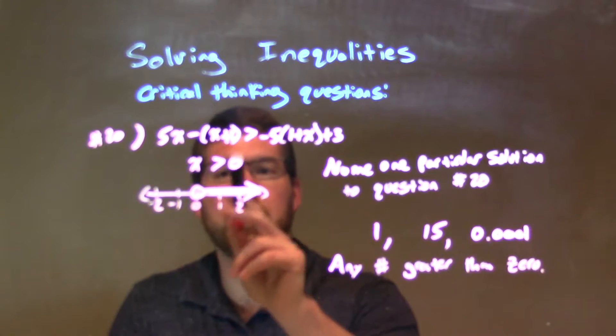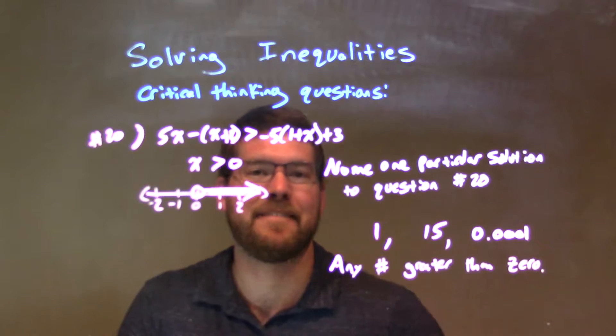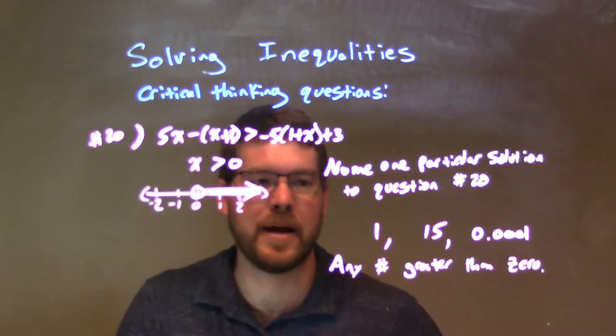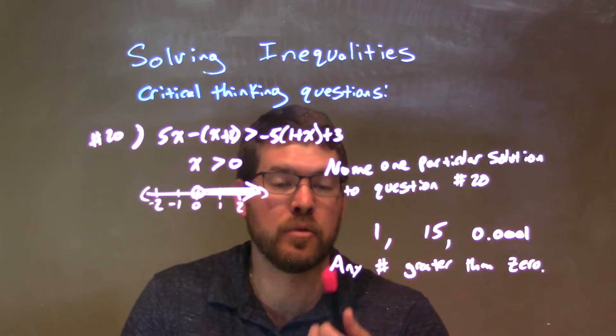Then, the solution to that was x was greater than 0, and we have a quick little graph here of that. We have an open circle at 0, we shaded to the right.